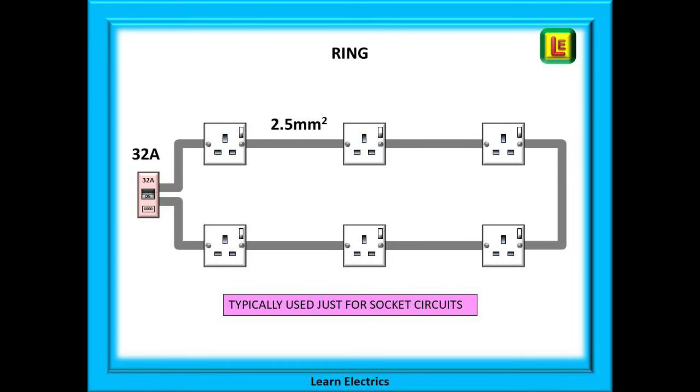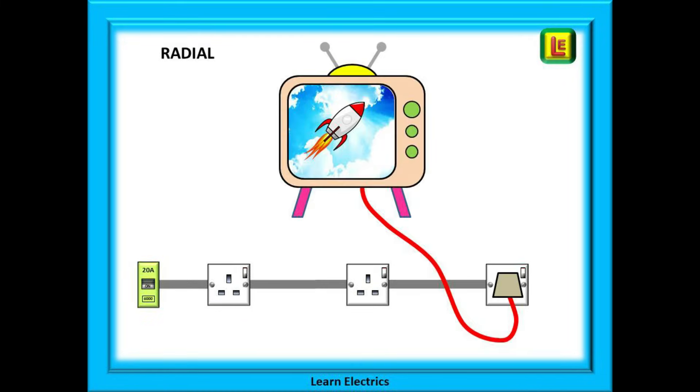Ring circuits are typically used just for socket circuits. They have multiple points of use and a larger floor area can be covered by a ring circuit for a given amount of copper. There is, however, one major drawback with ring circuits that you must be aware of.